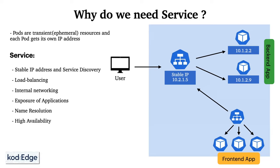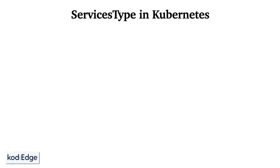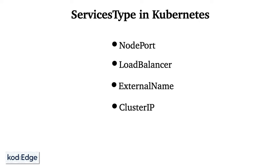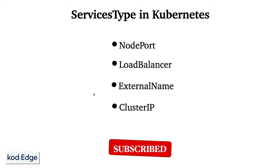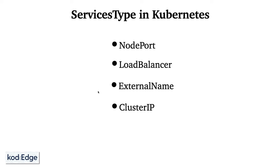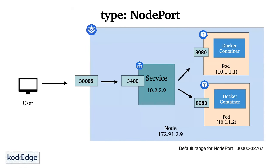There are different types of services: NodePort, LoadBalancer, ExternalName, and ClusterIP. These service types provide different ways to expose and access your application in the Kubernetes cluster depending on your specific requirements. Let's start with NodePort — a NodePort service exposes the service on a static port on each node in the cluster.